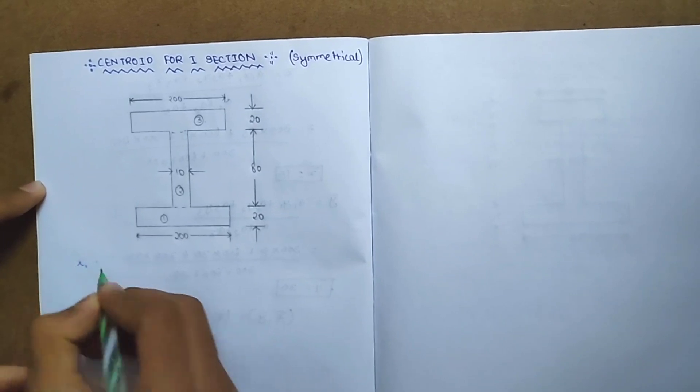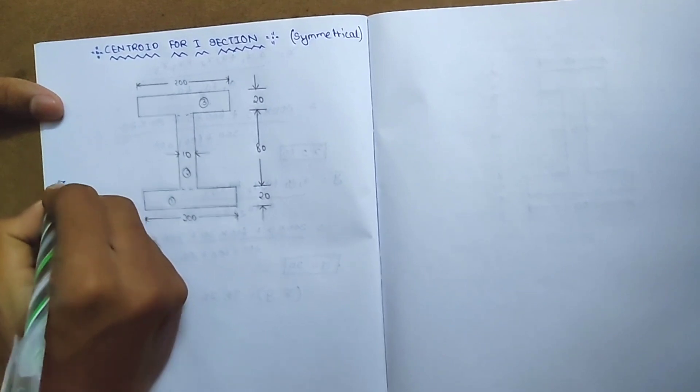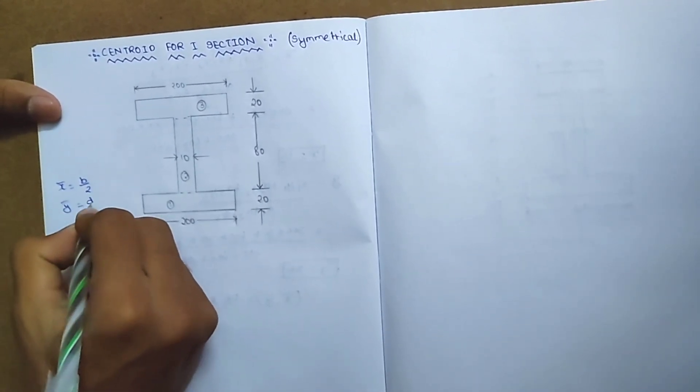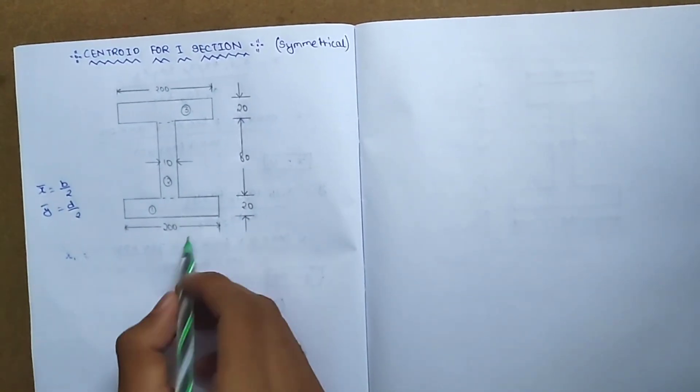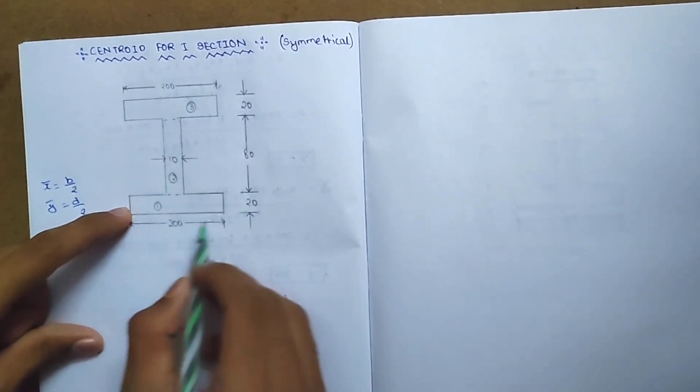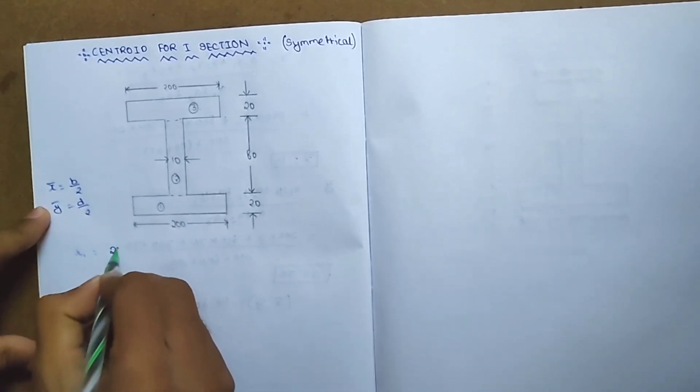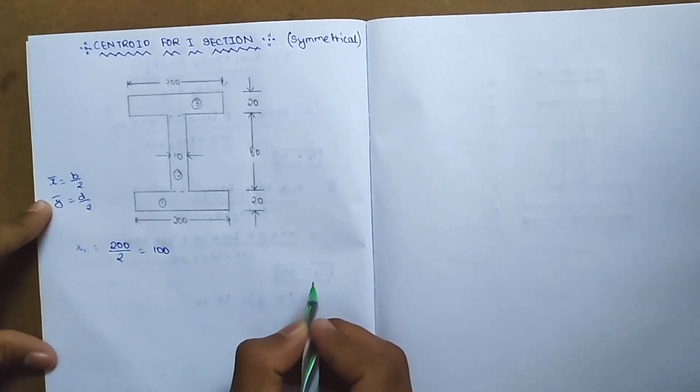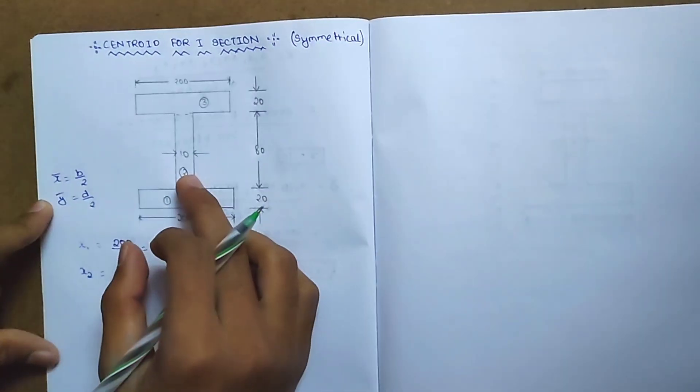x1 is equal to b by 2. For each rectangle, x-bar equals b by 2. This rectangle has breadth 200, so x1 equals 200 by 2, which is 100.